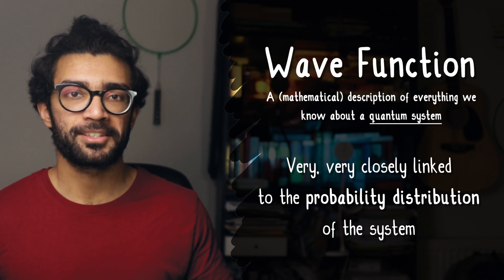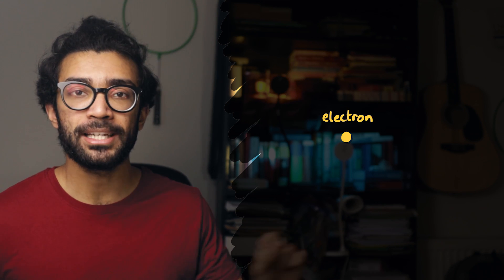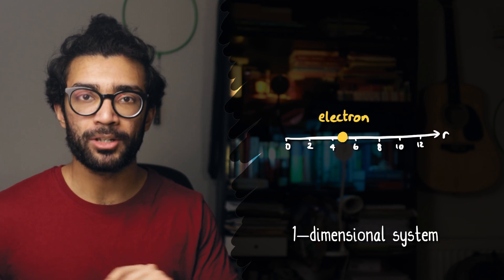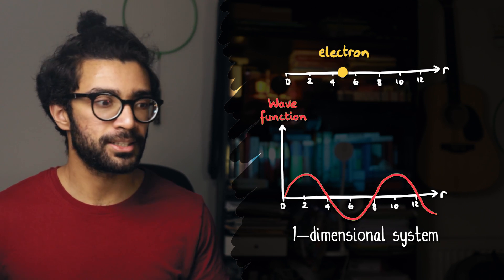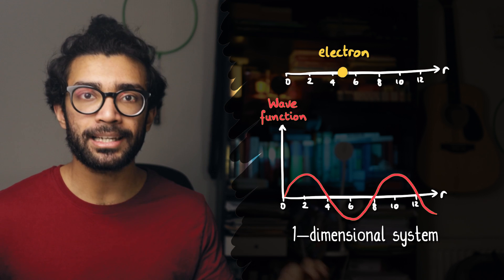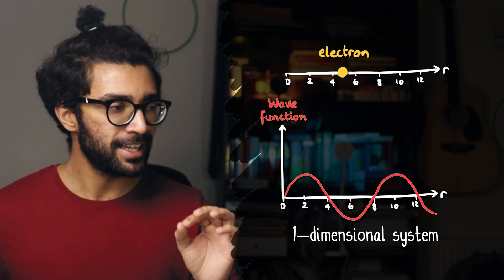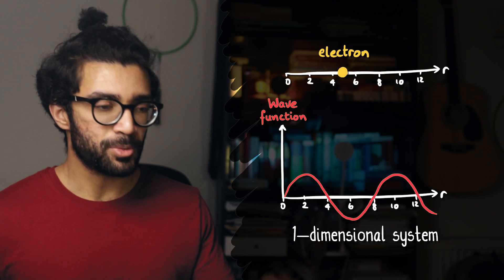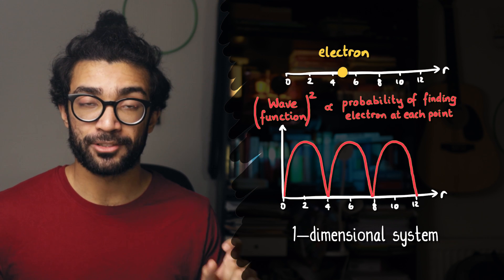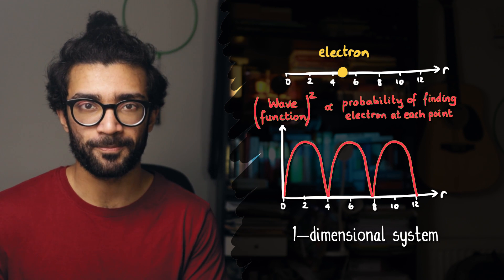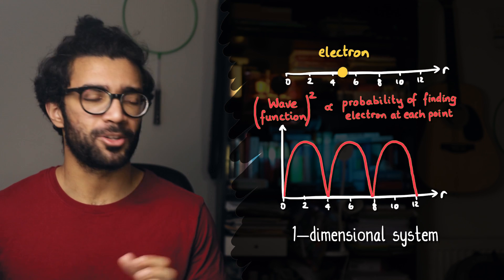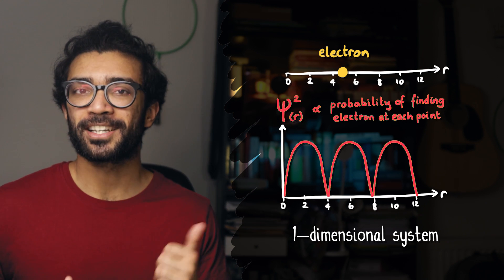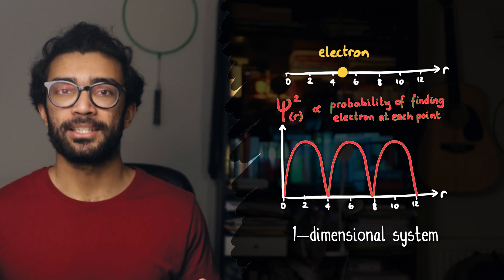In fact, a wave function is very closely linked to the probability distribution of our system. Let's say our system consists of a single electron that's only able to move across a single straight line — a one-dimensional system. Our wave function tells us everything we can know regarding how likely we are to find our electron at different positions along this line. Specifically, it's actually the square of the wave function that's related to the probability distribution. The wave function is often labeled with the Greek letter psi, so what we're looking for is psi squared, and it's this function that's related to the probability distribution.